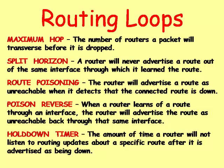The following are methods used to prevent routing loops. Maximum hop is the number of routers a packet will traverse before it is dropped. Split horizon means a router will not advertise a route out of the same interface through which it learned the route — if it does, the route is dropped. Route poisoning means the router will advertise a route as unreachable when it detects the connected route is down.